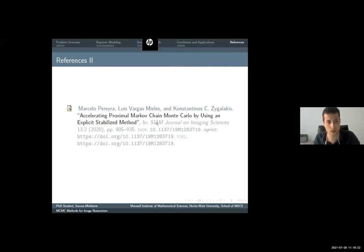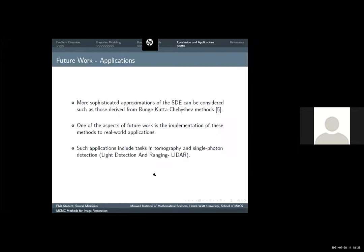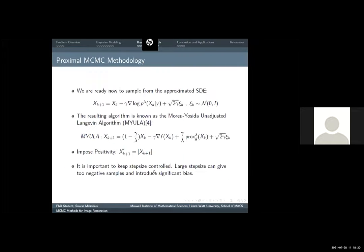Can you go back to that slide where you had the positivity constraint? This one, right. So you basically reflect, you are reflecting if you take the absolute value in this case, right?